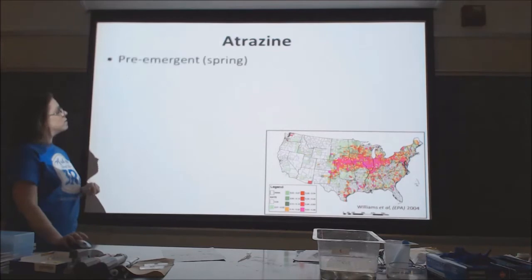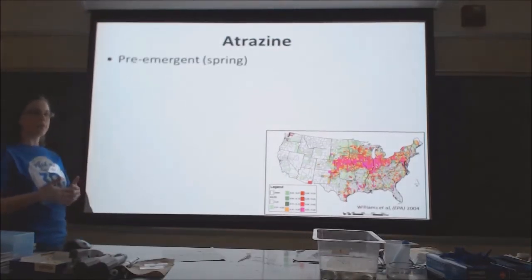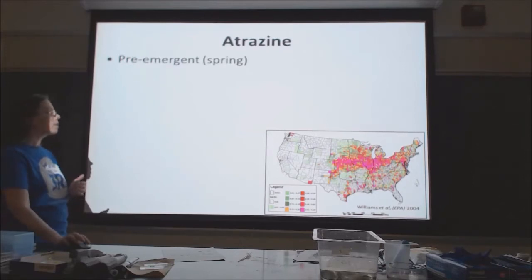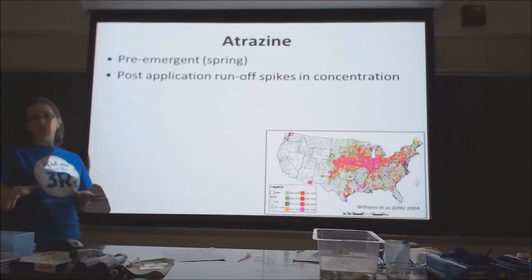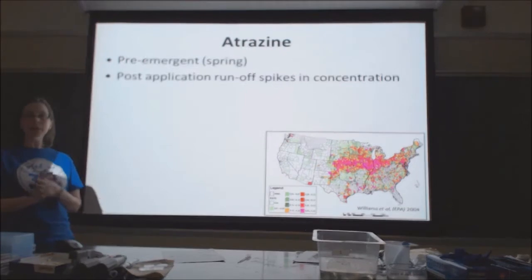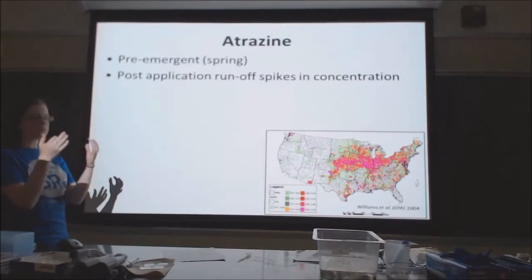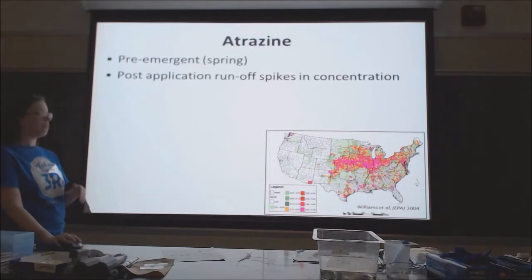Atrazine is a pre-emergent herbicide, meaning it's applied early in the growing season to prevent weed growth. If you spray atrazine on a field when there's very little vegetation and then have a strong rain event, the runoff from that field would have a higher concentration of atrazine because it would wash off the field.